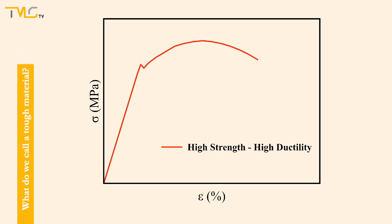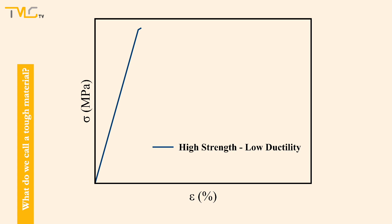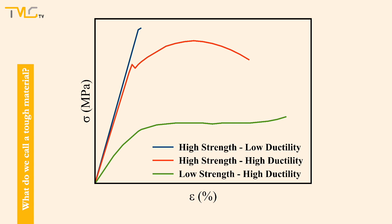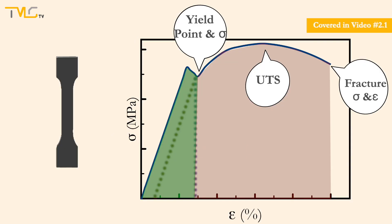A material is called tough if and only if it shows both strength and ductility. In other words, a specimen having high strength but brittle characteristics or ductile characteristics but low strength values cannot be called a tough material.